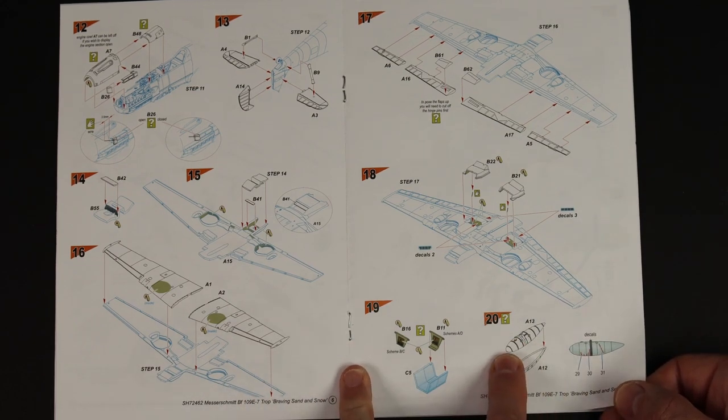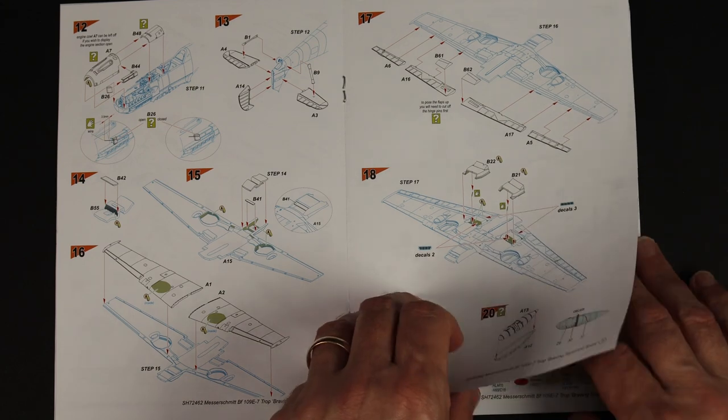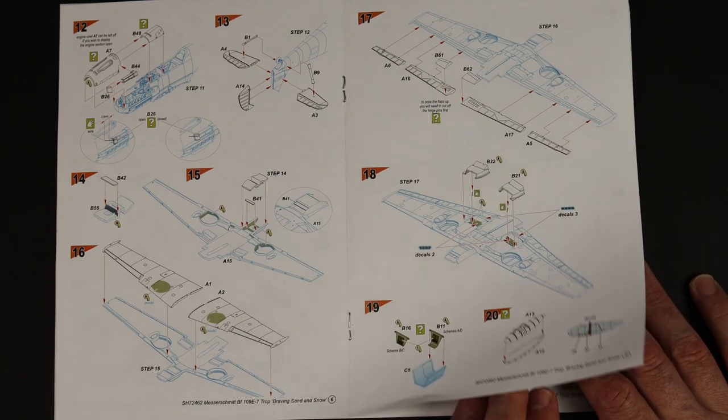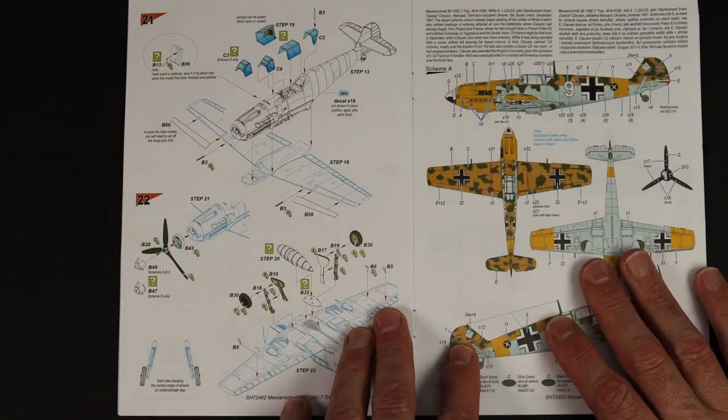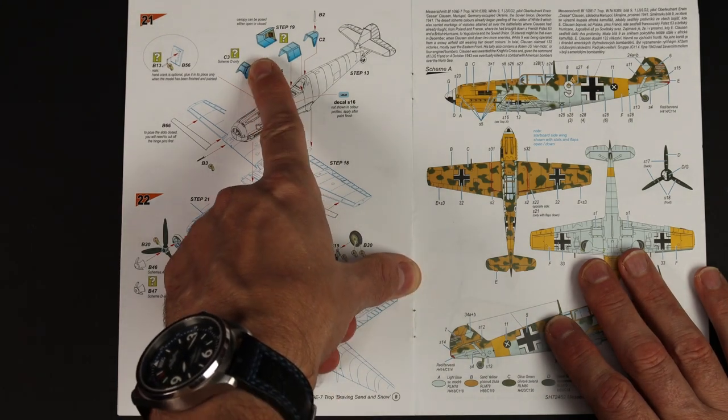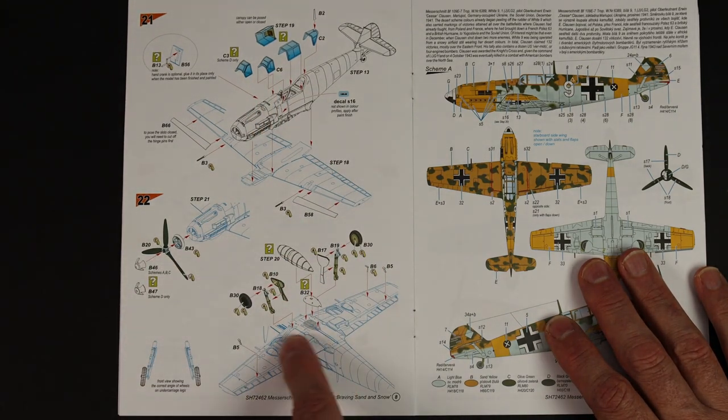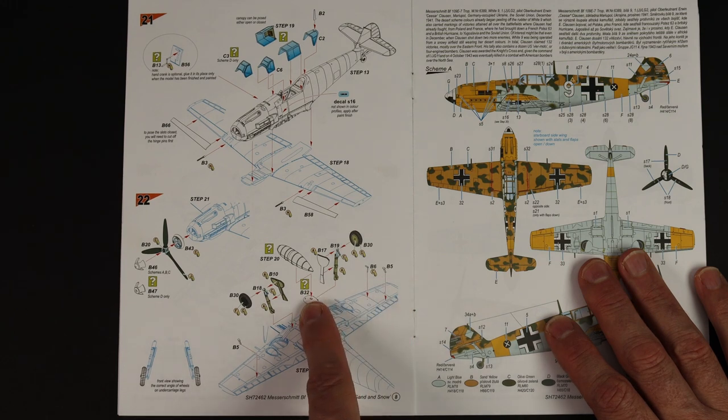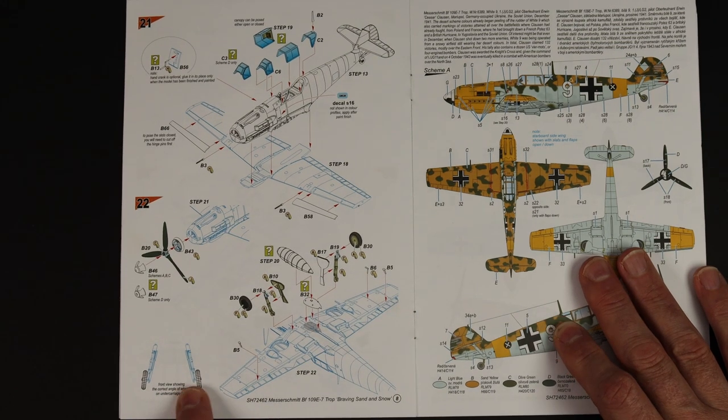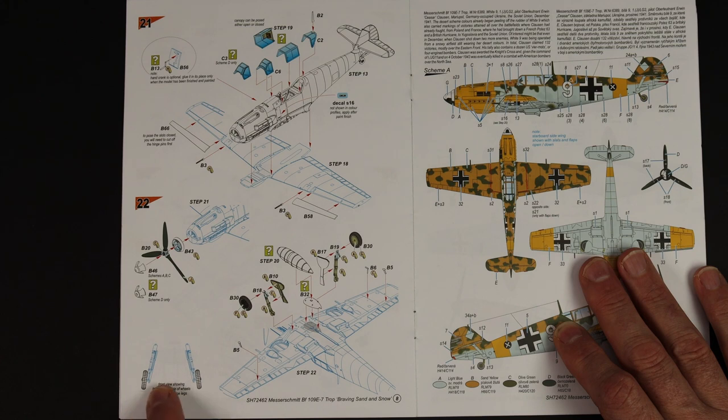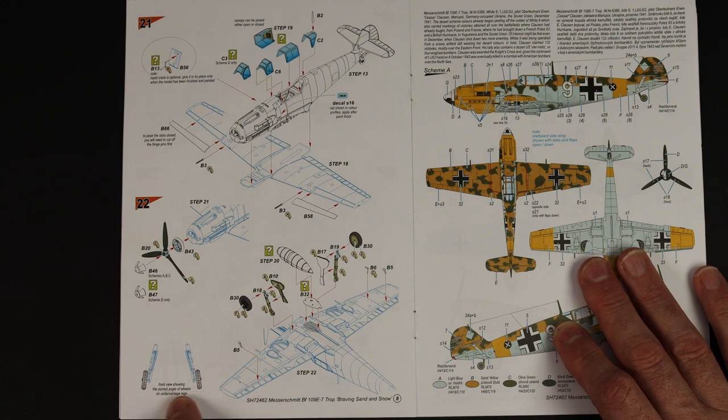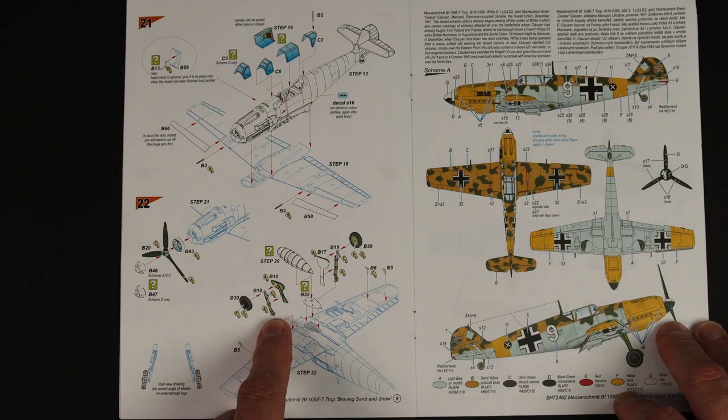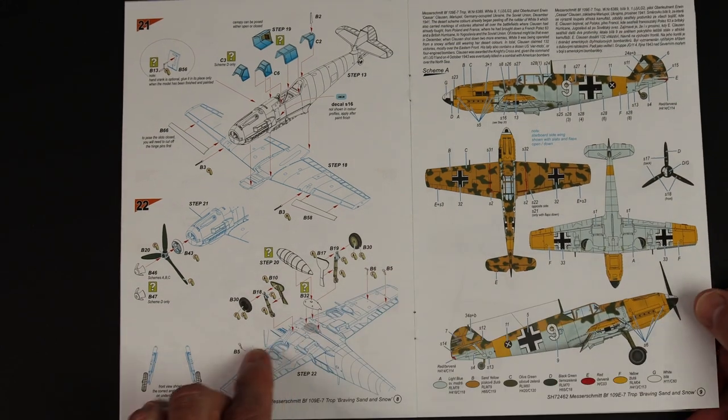Drop tank, so that's nice actually, I always like hanging ordnance under my aeroplanes. Canopy goes on open or closed, prop, undercarriage fairly simple affair but a really nice diagram showing you the angle from the front. It doesn't show you from the side the forward rake so you'd have to do your research on that.